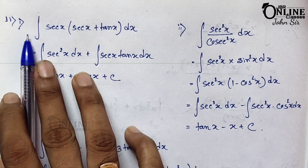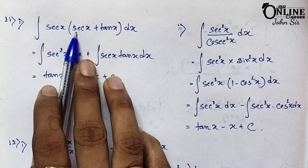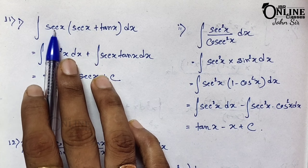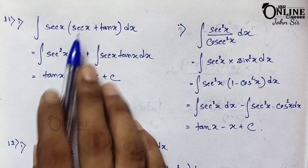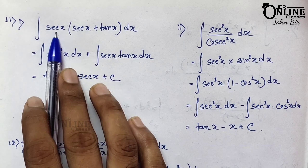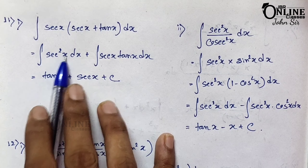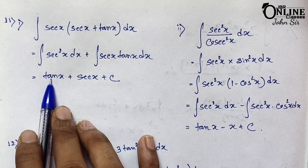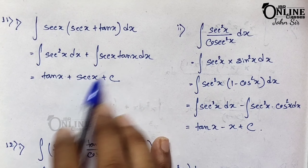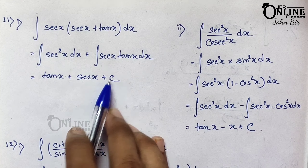In sum number 11: integration of sec x into (sec x + tan x) dx. First you have to multiply sec x with sec x — it becomes sec²x — and then sec x·tan x. Integration of sec²x equals tan x, and integration of sec x·tan x equals sec x. So the answer is tan x + sec x + c.